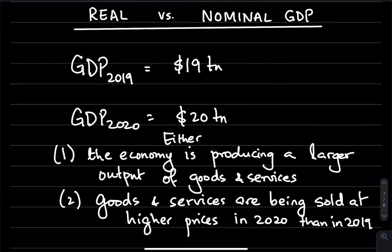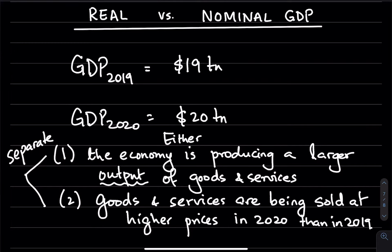Whenever we are studying changes in the economy over time, economists are interested in separating these two effects. We want to understand: are we really producing more, or is it just that prices are higher this year and so we are getting a larger number for our GDP?